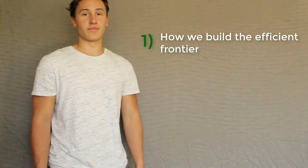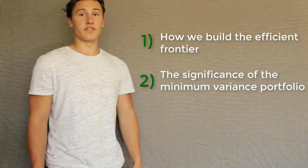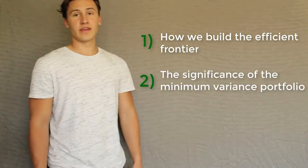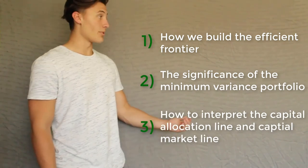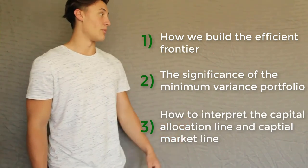Hi everyone. Today we will be learning about how investors can achieve maximum returns for a given level of risk by selecting a portfolio along the efficient frontier. We will also learn how investors can further adjust their risk by including risk-free assets to achieve a point on the capital market line. By the end of this video you will learn how we build the efficient frontier, the significance of the minimum variance portfolio, and how to interpret the capital allocation line and capital market line.